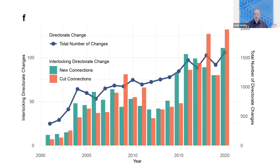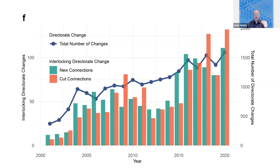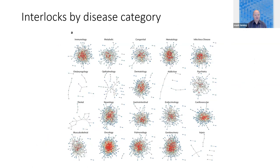Some of these change over time, of course. People join boards and people leave boards. Both the new connections and the cut connections are increasing — the total number of changes are increasing. That said, as we show in the paper, interlocked board members actually have a longer tenure than non-interlocked board members. They tend to stay longer on boards when they are, in fact, sitting in multiple potentially conflicting roles.